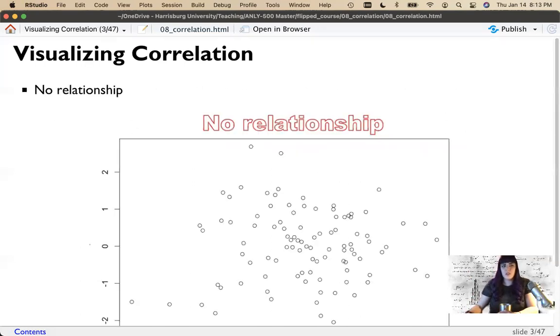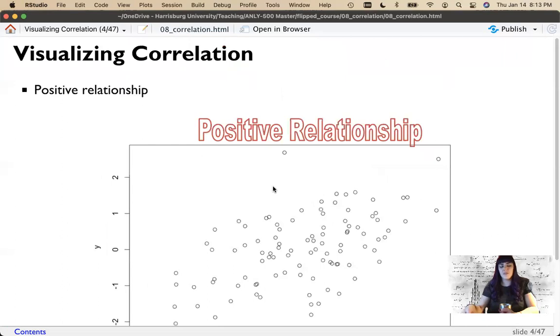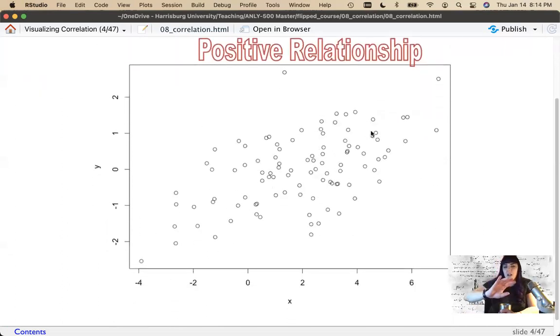So here's a visualization of no relationship where the dots don't make any discernible linear pattern. We're going to mostly focus on linear statistics in this course. Our line is almost straight across. When you see that or just a blob of dots, to me this looks like a frog, that implies there's probably no relationship between x and y.